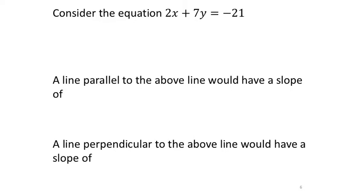It would be great if this were in slope-intercept form, because we could find the slope quickly. Unfortunately, it is not. So I'm going to change it into slope-intercept form to find the slope. Slope-intercept form is y equals mx plus b. A common mistake is that students look at this and say the slope is the coefficient of x, which is 2. No — you need to be careful, because that is a common enough error.